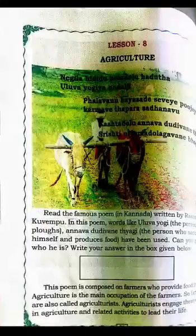Today I am going to explain Social Science, which is one part of EVS — Lesson Number 8: Agriculture. I already started this lesson in the previous class and today I will continue. In the previous class, I explained a poem written by Rashtrakavi Kuyempu.